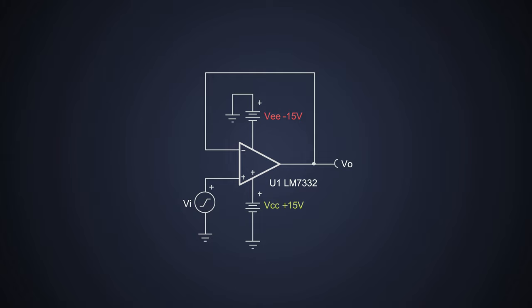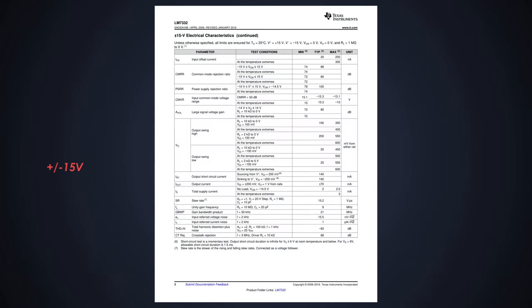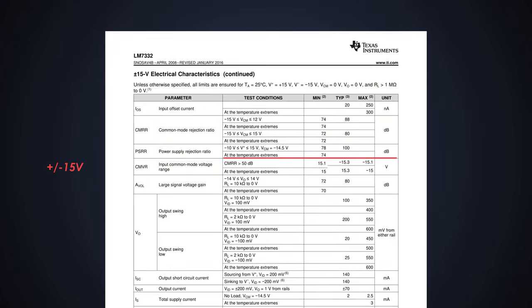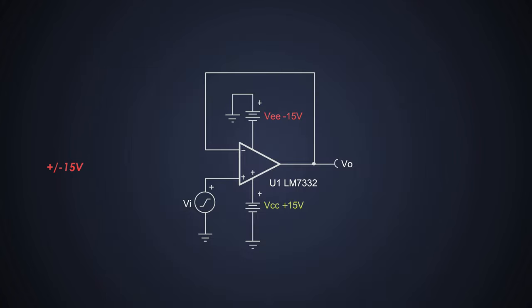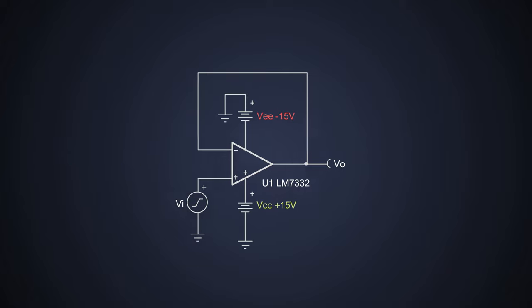Next we need to check if the input common mode voltage of our op-amp can handle plus or minus 15 volts or not. This range of the amplifier must be greater than the input signal voltage range. This range for this amplifier is between minus 15.1 to 15.1 volts which is greater than the required input common mode range of the design. There is more.